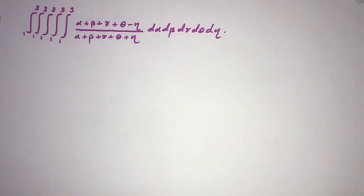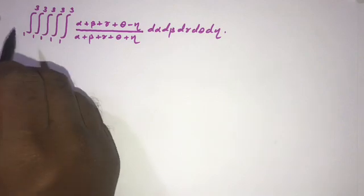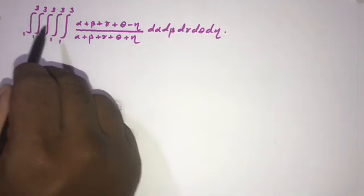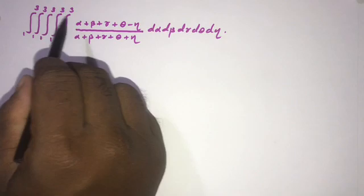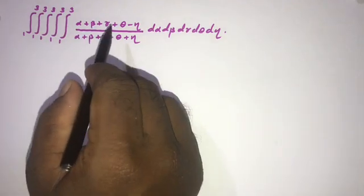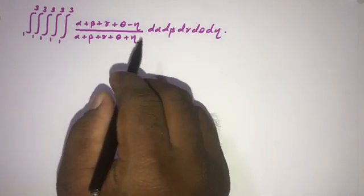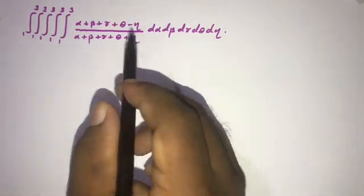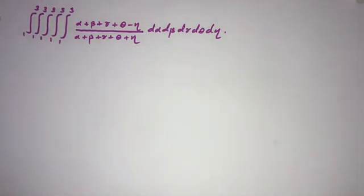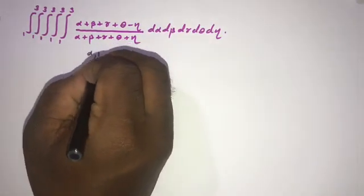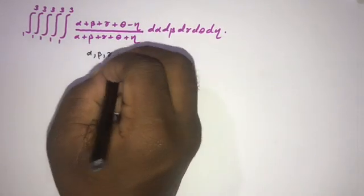Hi, welcome to the Mathematics My Channel. Today we are going to solve another interesting integral question: the integral from 1 to 3, repeated five times, of (alpha plus beta plus gamma plus theta minus eta) over (alpha plus beta plus gamma plus theta plus eta), with respect to d alpha d beta d gamma d theta d eta.